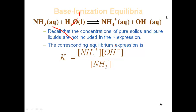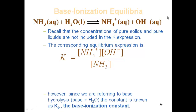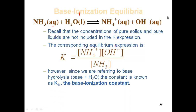Now, since we're talking about base hydrolysis — base plus water — we're going to say it's not K anymore. We're going to call it Kb, which is an indication of something called the base ionization constant. It's set up the same way as your Ka, except now you're producing hydroxide, so it's a base problem, and we're using the Kb as our ionization constant.